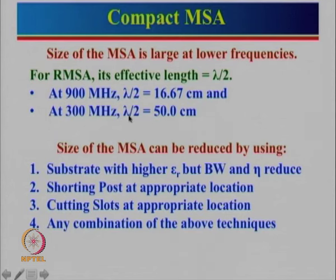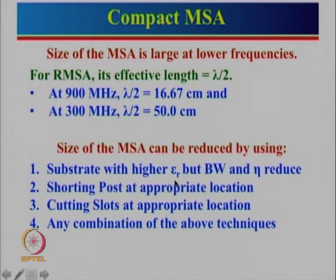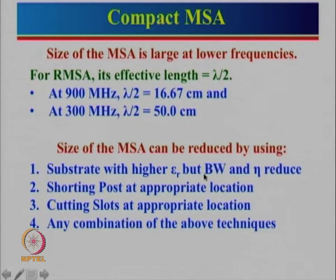If epsilon r is high, then the size will be reduced. The size of the microstrip antenna can be reduced by using a substrate with higher epsilon r. Suppose we use epsilon r of approximately 9.8 or 10; effective epsilon r may be around 9. So square root of epsilon r will be 3, and this dimension will be reduced by 3 times. But the problem is that bandwidth and efficiency reduce, and these are things we had seen when we discussed the basic rectangular microstrip configuration.